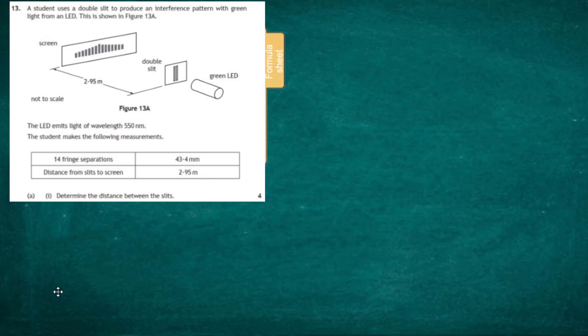Question 13 from the 2019 Advanced Higher Physics examination of the SQA. A student uses a double slit to produce an interference pattern with green light from an LED, as shown in figure 13A. You can see the green light LED source, the double slit, and the screen 2.95 meters away showing the interference pattern. It's not drawn to scale. The LED emits light of wavelength 550 nanometers.